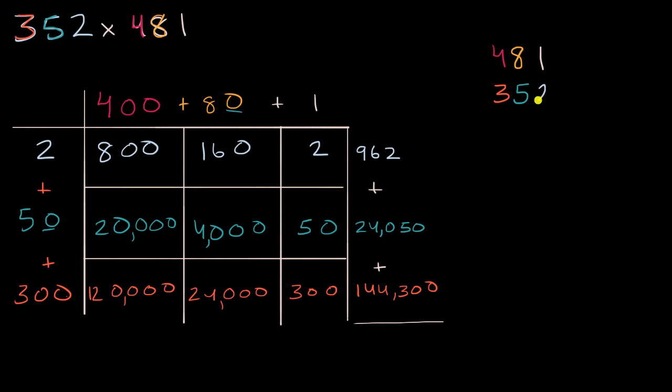And in the standard algorithm, the way that we do it is we start with this 2 in the ones place, and then we multiply it times 481. So 2 times 1 is 2, 2 times 8 is 16. So we put the 6 here, and then we carry the 1. We're really regrouping that as a hundreds, that's ten tens, which is a hundreds. And then 2 times 4 is 8, which is really 800, plus 1, so that's 9, or really 900. Do you see a pattern here? This 962 is the exact same thing as that 962 right over there.